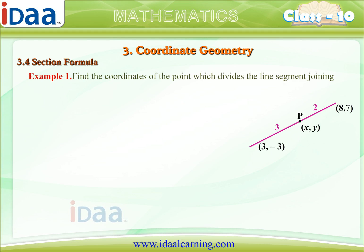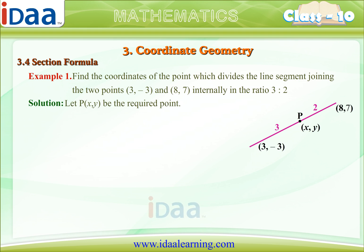Find the coordinates of the point which divides the line segment joining the two points (3,-3) and (8,7) internally in the ratio 3 is to 2. Let P(X,Y) be the required point. Using the section formula, we have...